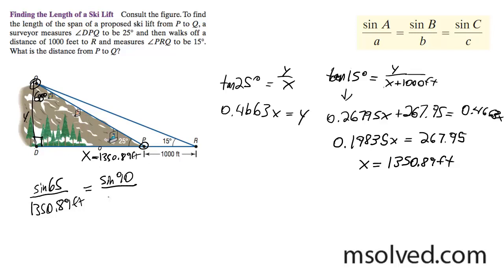1,350 over, I'll just call this line PQ. Now I'm going to cross multiply, so PQ times sine of 65 is equal to sine of 90.